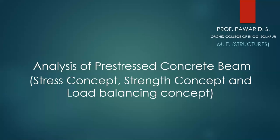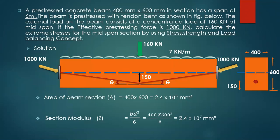Today we are going to see the analysis of a pre-stressed concrete beam using the stress concept, strength concept, and load balancing concept. The problem: a pre-stressed concrete beam 400 by 600 mm in section has a span of 6 m. The beam is pre-stressed with a tendon as shown in the figure. The external load consists of a concentrated load of 160 kN at mid-span. The effective pre-stressing force is 1000 kN. Calculate the extreme stresses at the mid-span section using all three concepts.